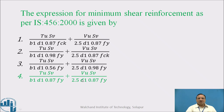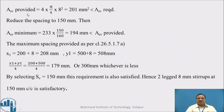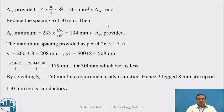ASV provided with four-legged 8 mm stirrups is 4 × (π/4 × 8²) = 201 mm², which is less than the minimum required 233 mm². Therefore, we reduce the spacing from 160 mm to 150 mm. Recalculating ASV minimum at SV = 150 mm gives 194 mm², which is less than ASV provided of 201 mm². This satisfies the minimum reinforcement requirement.